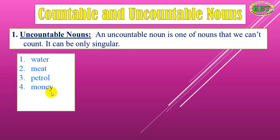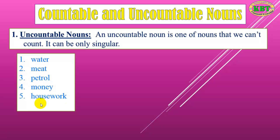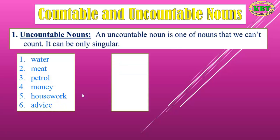Number three: petrol. Number four: money. We cannot count money directly, but we can count specific currency like dollars or pounds. Number five: housework. Number six: advice.